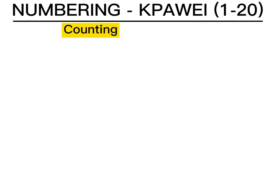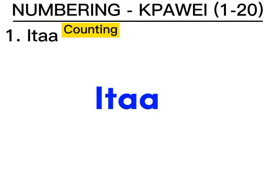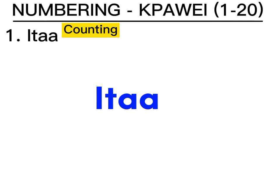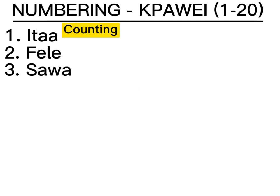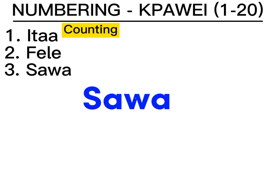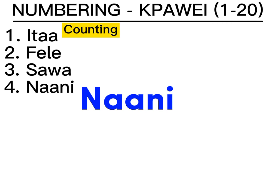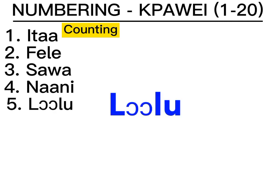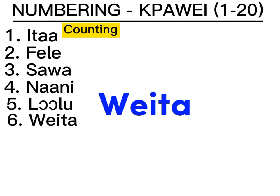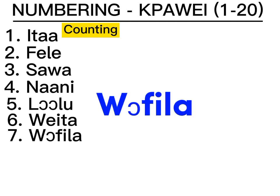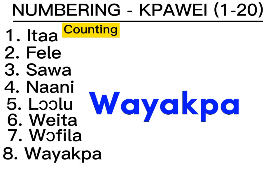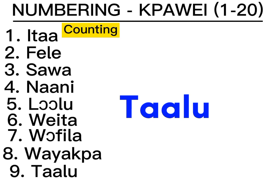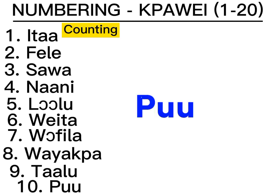When we count in Mende, we start with Ita. Some people pronounce it as Ita, but it is actually Ita. Then: Fele, Sawa, Nani, Lolo, Weita, Wofla, Wayaba, Talu, Puu.